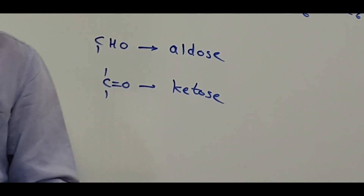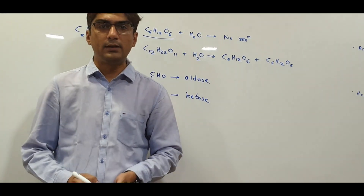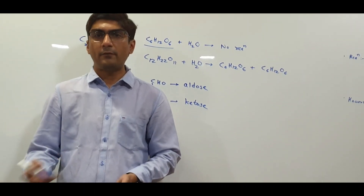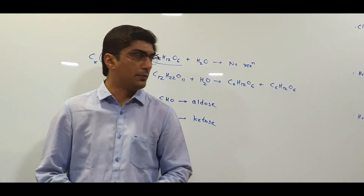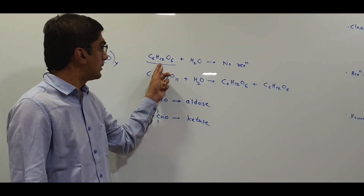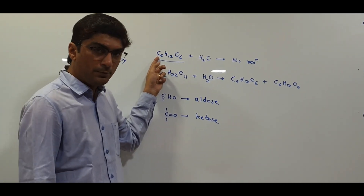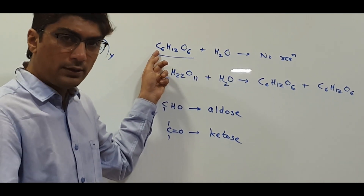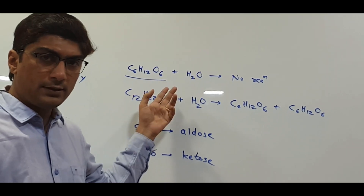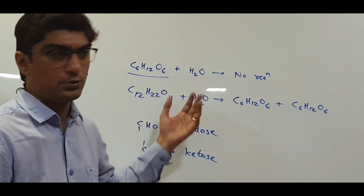Carbohydrates can be further classified on the basis of the number of carbon atoms present. We call it triose if 3 carbon atoms are present, tetrose if 4 carbons, pentose if 5 carbons, and so on. So glucose C6H12O6 has 6 carbon atoms and contains an aldehyde group, so we call glucose an aldohexose. Fructose has 6 carbon atoms but has a ketone functional group, so we call it a ketohexose.